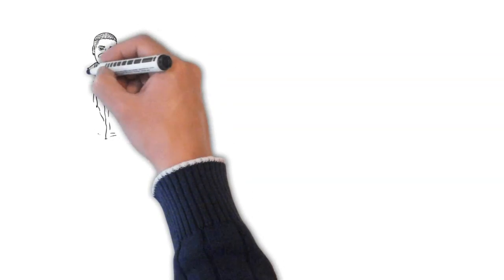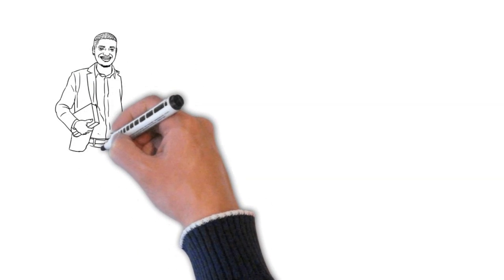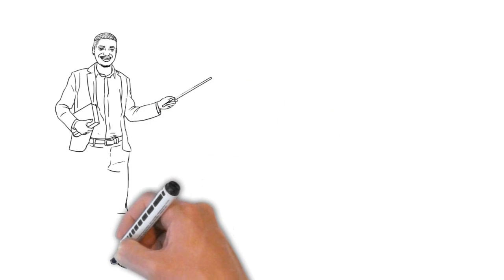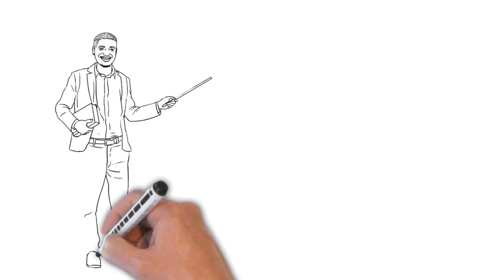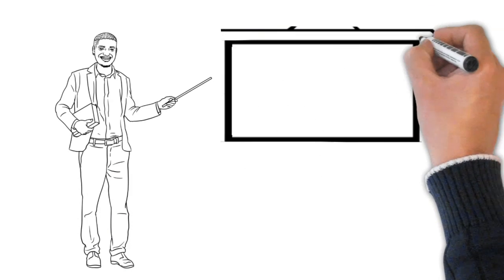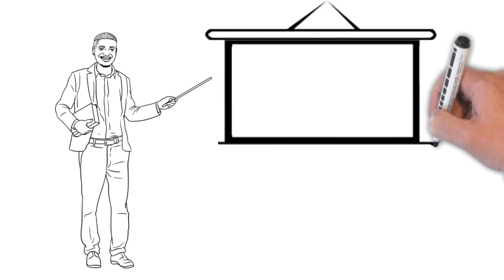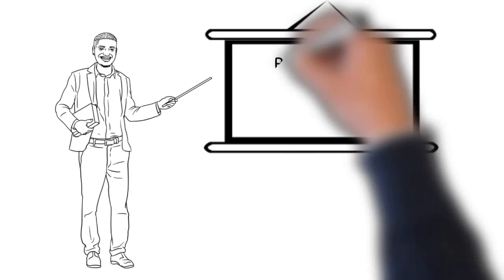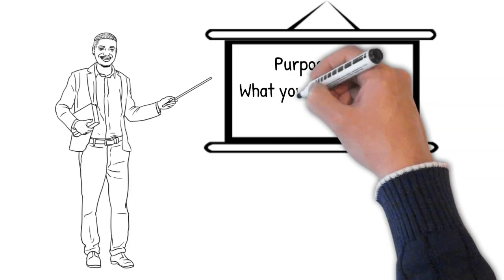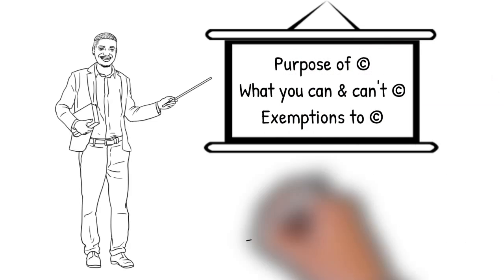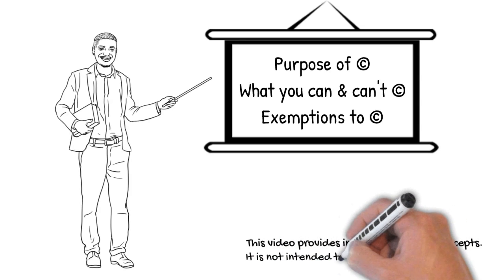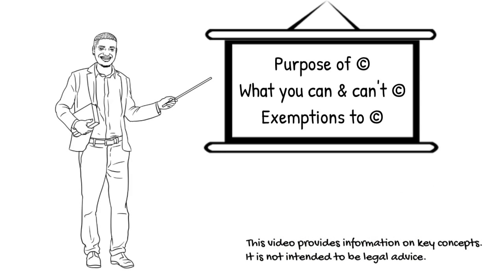Creative Commons licenses give creators a way to both retain rights over their creative works and allow others to use or share them legally. To understand how modern Creative Commons licenses work, this video reviews key elements of copyright law that protect intellectual property and some exemptions to copyright. We will cover the purpose of copyright, what you can and can't copyright, and exemptions on copyright. Please remember this video is providing information on key concepts and is not intended to be legal advice.